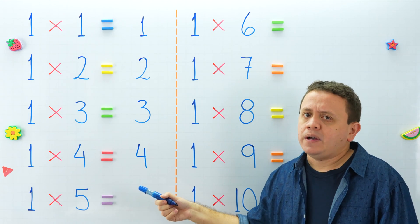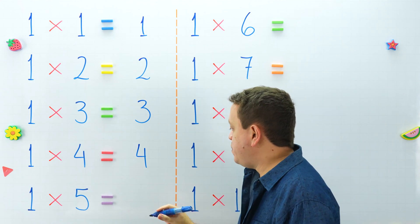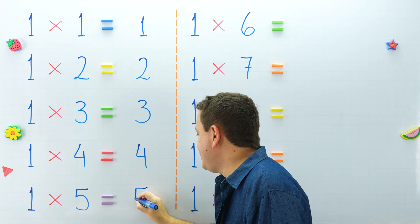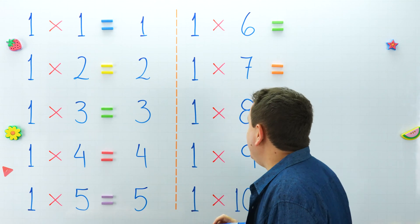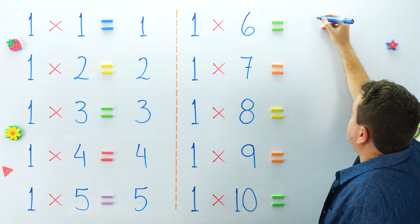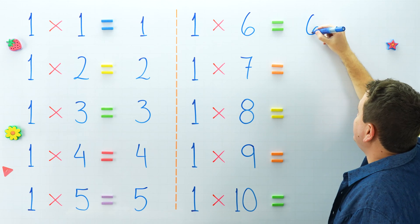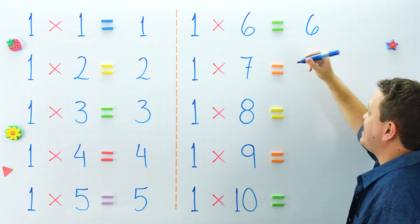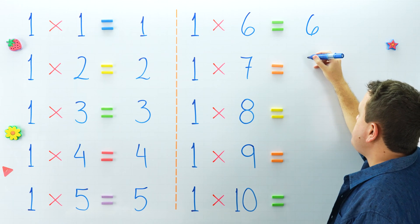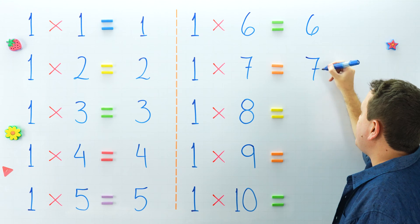What is 1 times 5? 1 times 5 equals 5. On the other side, 1 times 6 equals 6, and 1 times 7 equals 7.